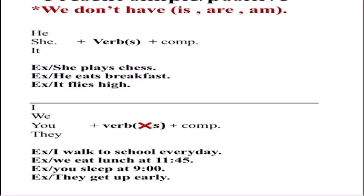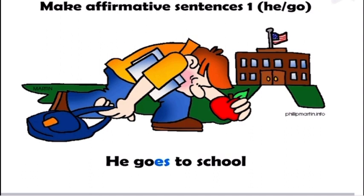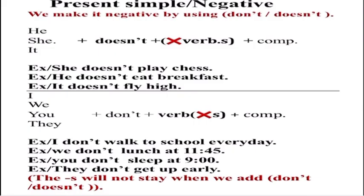This was the positive form — in positive form we don't have 'not'. For example: 'she cries' — we don't say 'she cry', we say 'she cries' with 's' because the subject is 'she'. Then: 'he goes to school' — we don't say 'he go to school' because we have to add 's' to the verb because of 'he'.